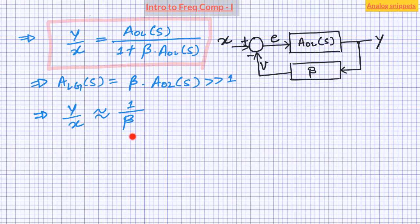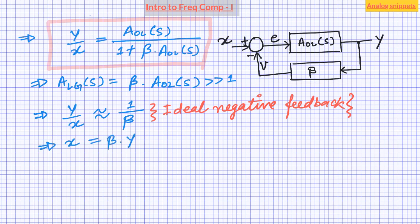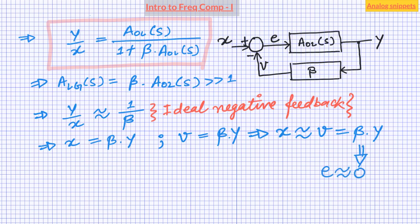This is the ideal behavior a negative feedback system strives to achieve. This equation implies that the input is approximately equal to the output multiplied by the feedback factor. Notice in the block diagram that the feedback quantity is also equal to output multiplied by the feedback factor — and this is no coincidence. Any functional negative feedback system will force the feedback quantity to be equal to the input, and that also implies making the error term — which is the input to the forward loop gain — equal to zero.